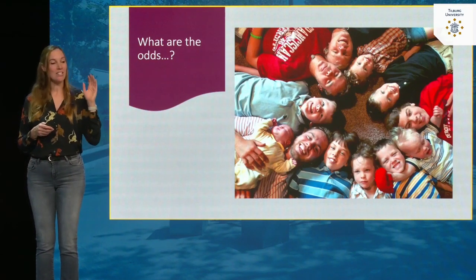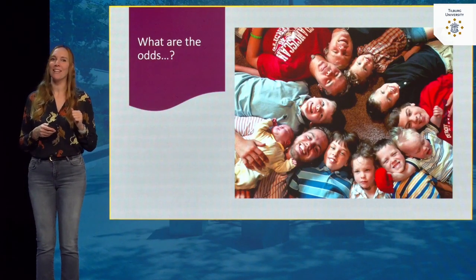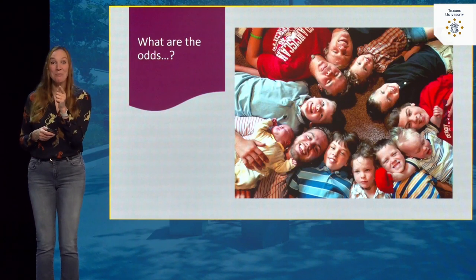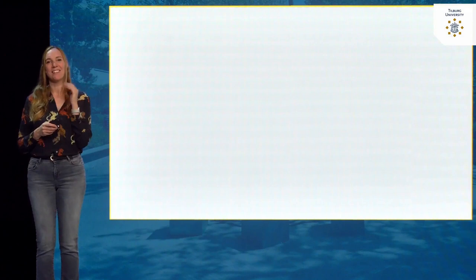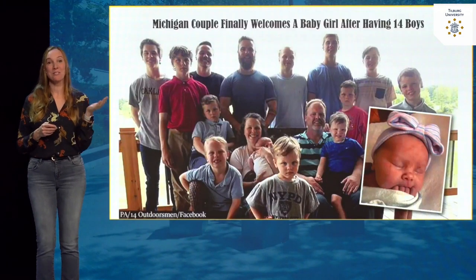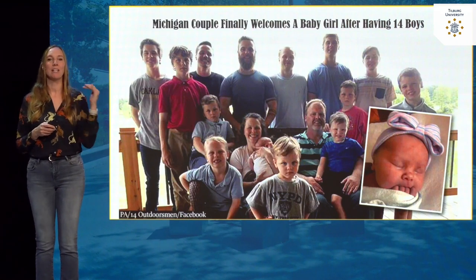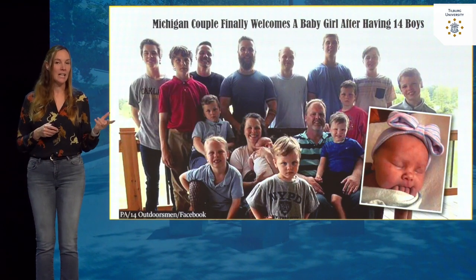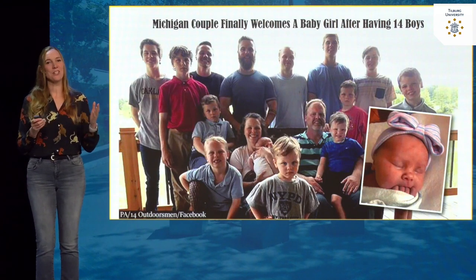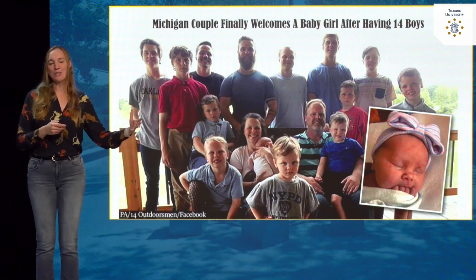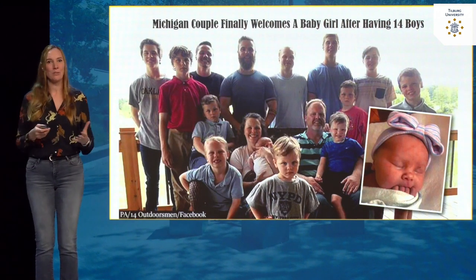The 13th baby of this family was another boy. The story doesn't end there — after the 13th boy the mother got pregnant again. Child number 14? Another boy. And then a miracle: the 15th baby was a girl. The Michigan couple finally welcomed a girl after having 14 boys. This is what I call persistent — I have three boys myself and I don't think I'd take it this far.